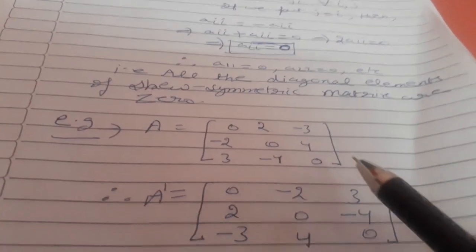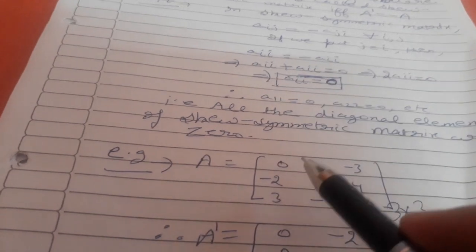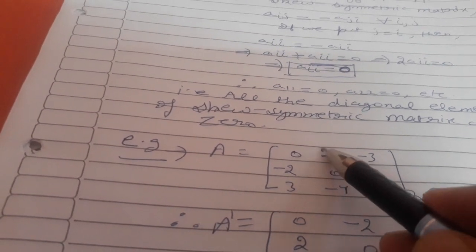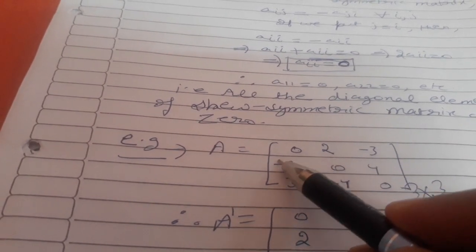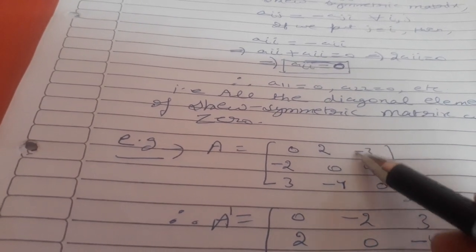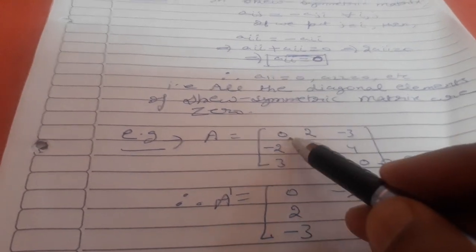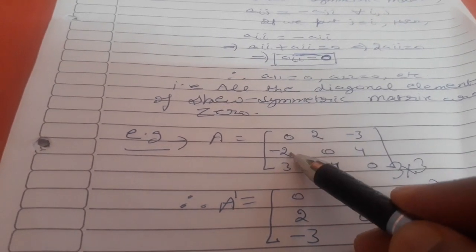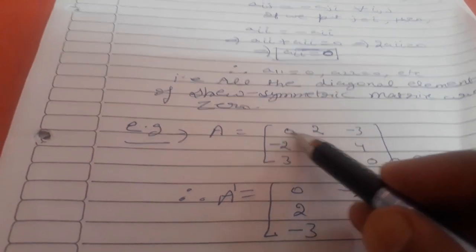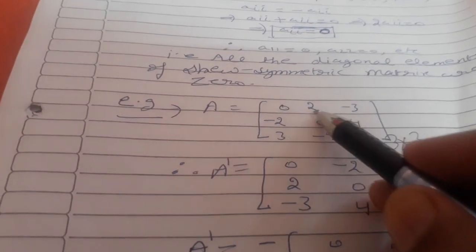For example, taking a 3×3 square matrix: in a skew-symmetric matrix, diagonal elements are 0. If A12 is 2, then A21 is minus 2. If A13 is minus 3, then A31 is 3. If A23 is 4, then A32 is minus 4. You can verify this by taking the transpose — interchanging rows and columns — and every element differs by a minus sign.